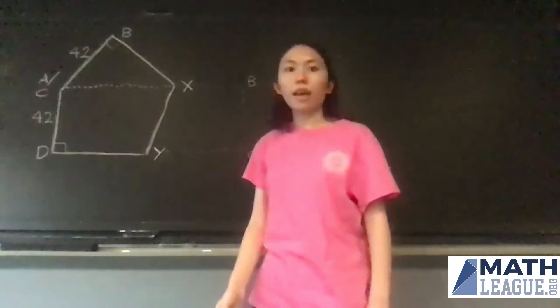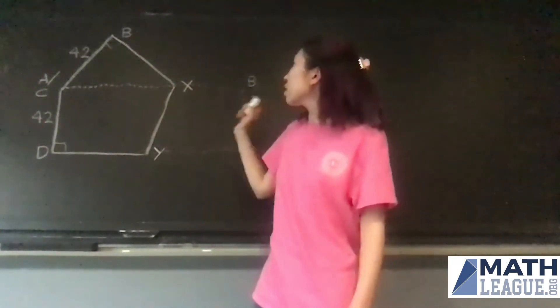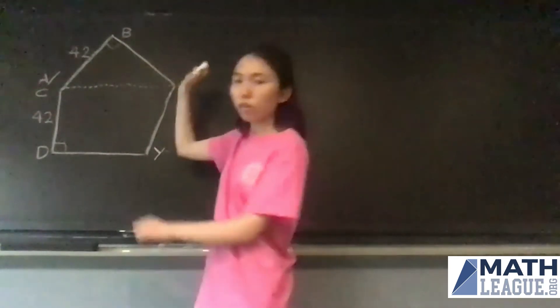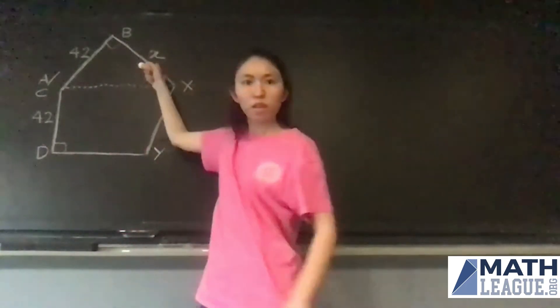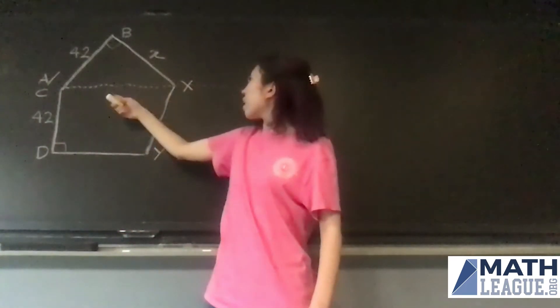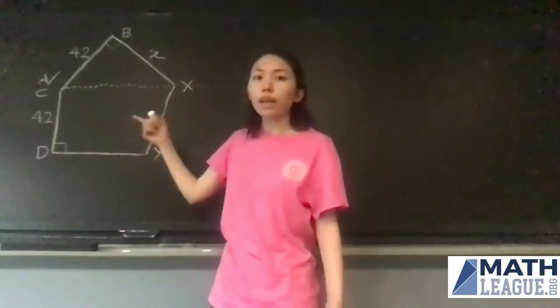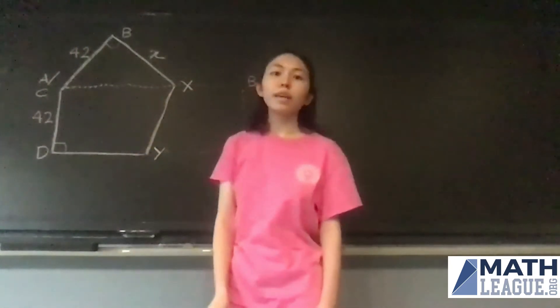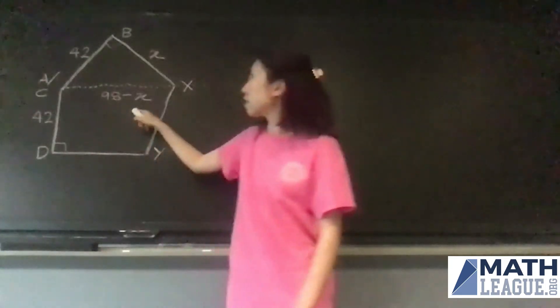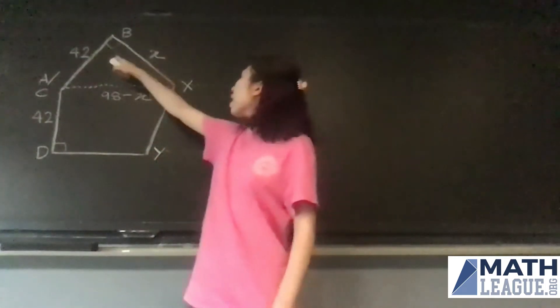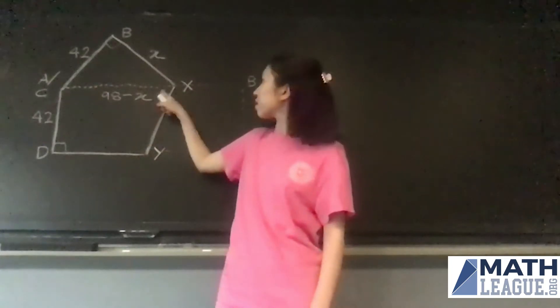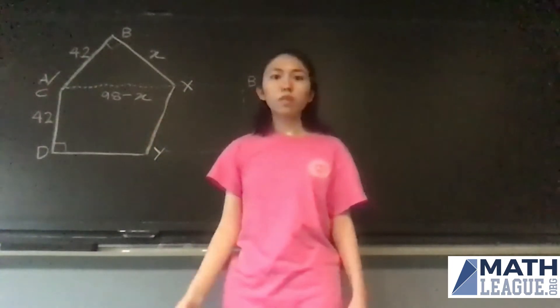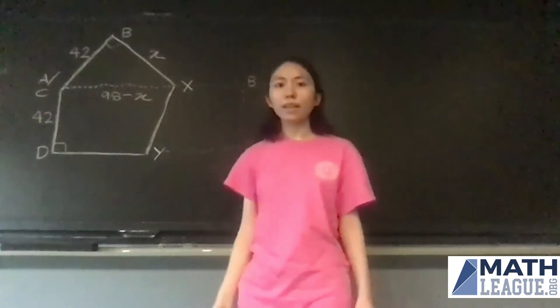So we can draw in AX. Let's say that BX is going to be equal to some X that we don't know. And we remember that AB was 98, so our length AX is going to just be 98 minus X. This is notable because now we have a right triangle here, triangle ABX. So let's see what we can do to solve for X.